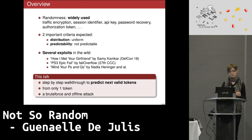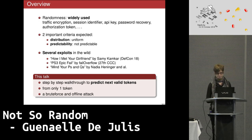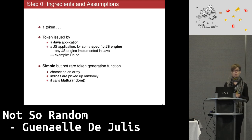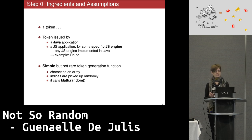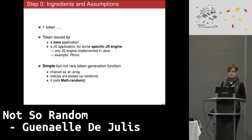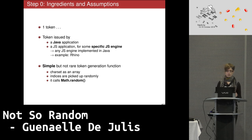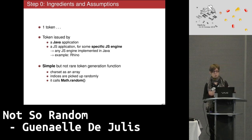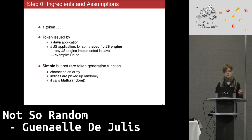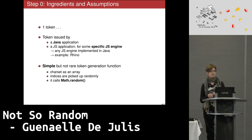I will show you step by step how the attack works. The first step is to know what assumptions we have to make for the attack to work. Of course, we need a token — not very difficult. Then the token needs to come from a Java application, which I will explain later. You can learn this by information gathering. Or it might be a JavaScript application, but only if the JavaScript engine was implemented in Java, because it will use the same pseudo-random number generator.